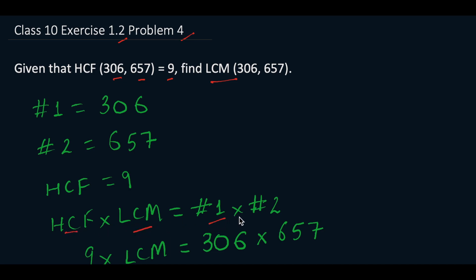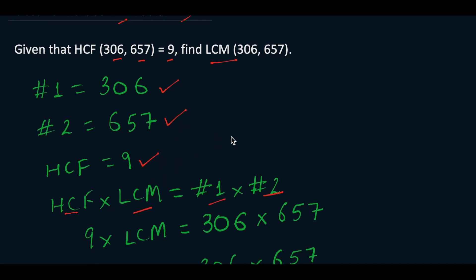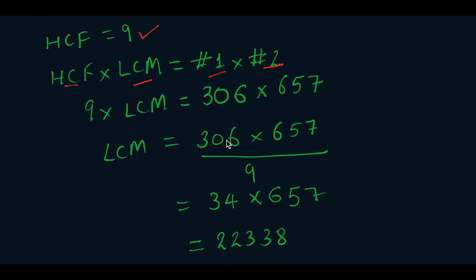So here our first number is 306, second number is 657, and HCF is given as 9. So we can write it as 9 multiplied by LCM equals 306 multiplied by 657.